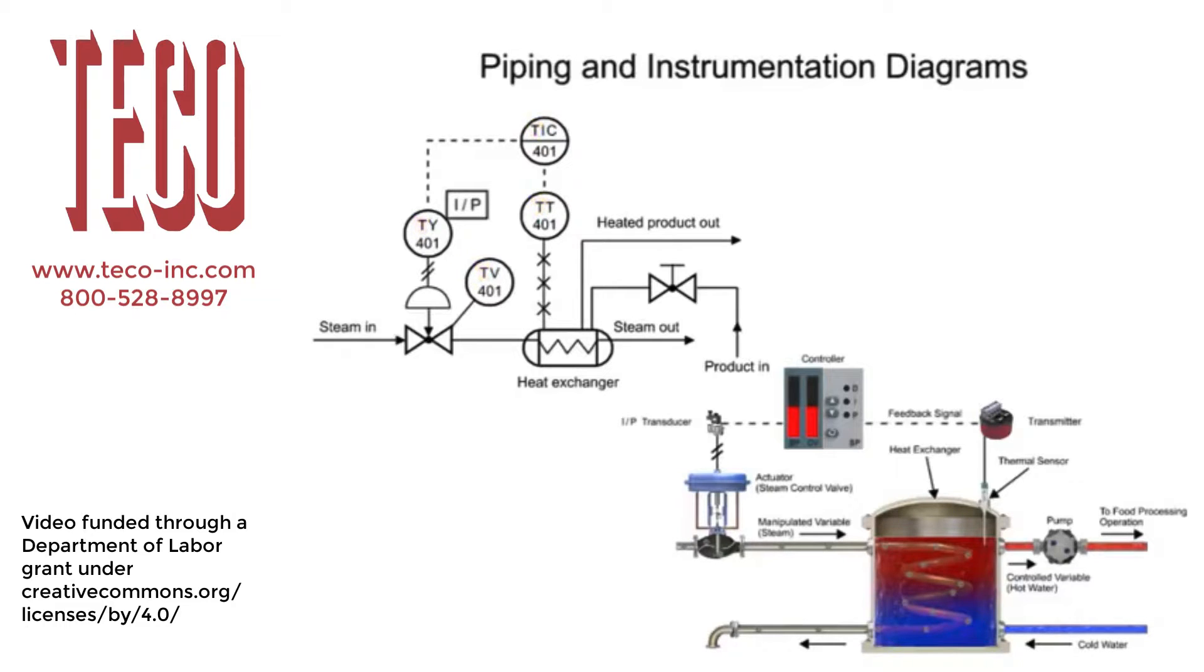The instrument connected to the heat exchanger contains two other types of information. The second letter in the functional identifier indicates it is a transmitter, and the balloon with no line inside its symbol indicates the device is field mounted.